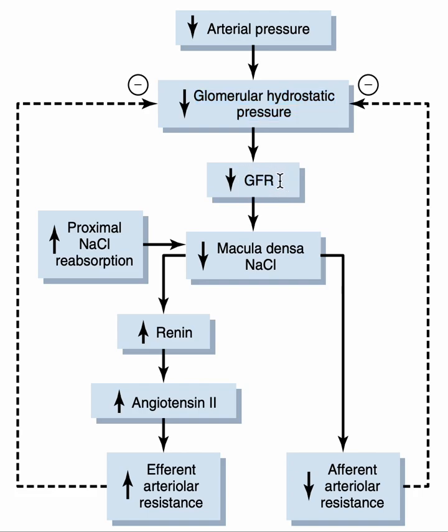When the GFR is decreased, the flow within the nephron is slowed. The fluid will move very slowly within the nephron, and this will allow the nephron to reabsorb more and more sodium and chloride, mainly at the level of the ascending loop of Henle. As a result, there is decreased delivery of sodium and chloride to the distal convoluted tubular cells.